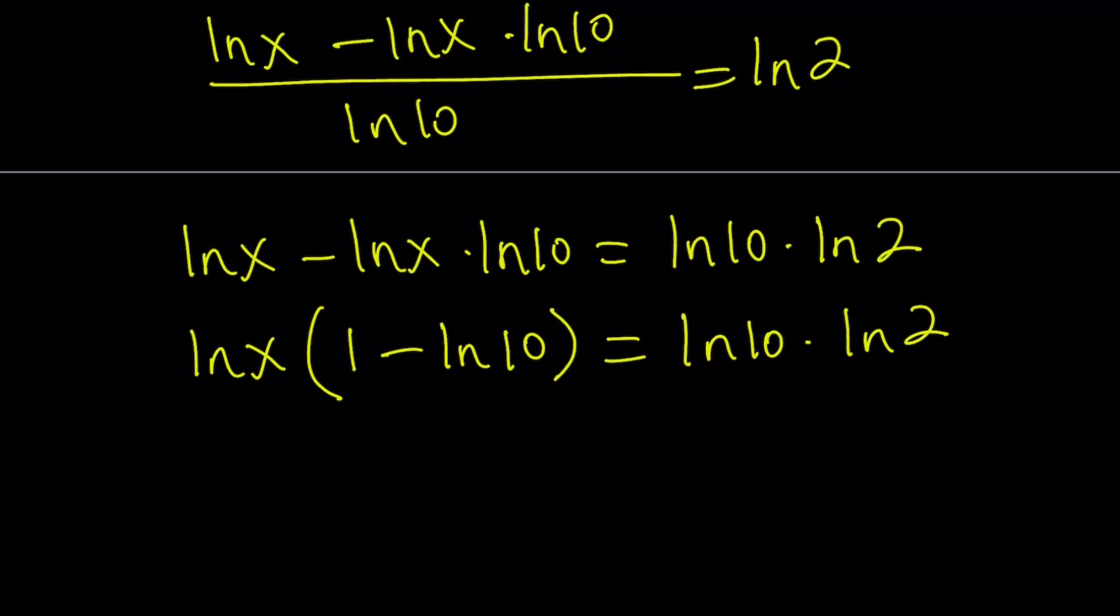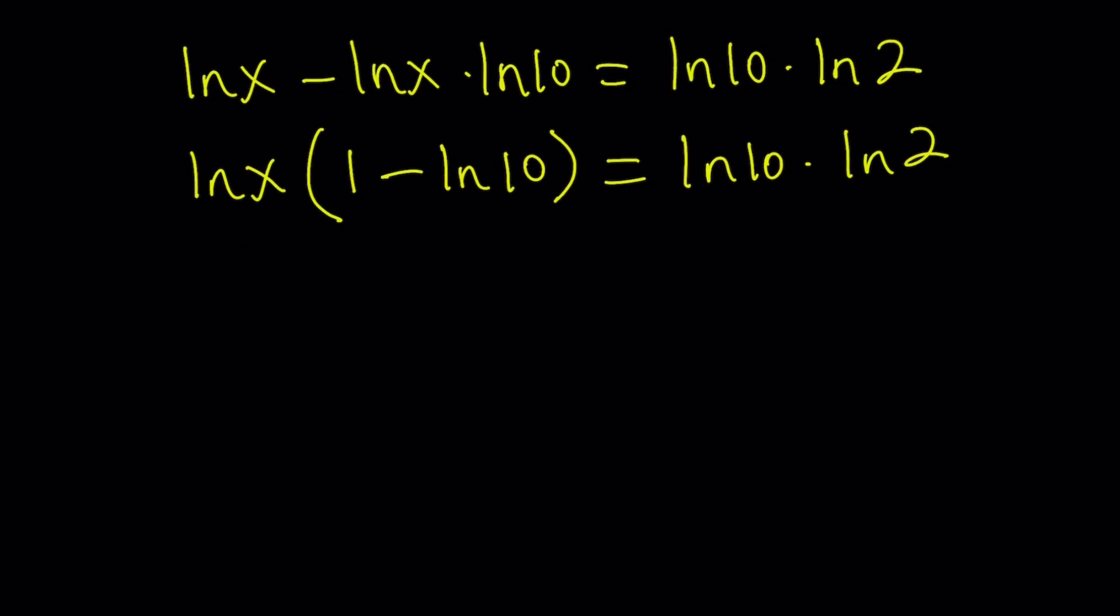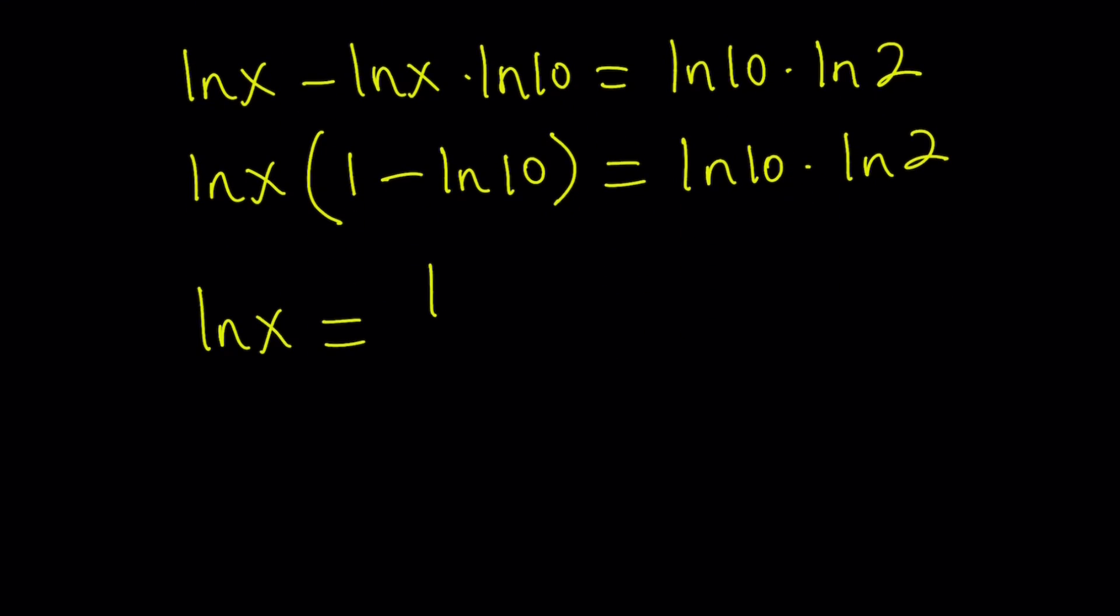So, we're going to go ahead and divide both sides by 1 minus ln 10. By the way, is it possible to get a negative answer? Yes. ln of something can be negative, but something cannot be negative.